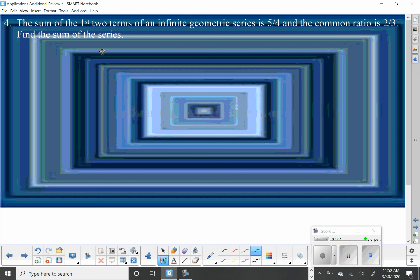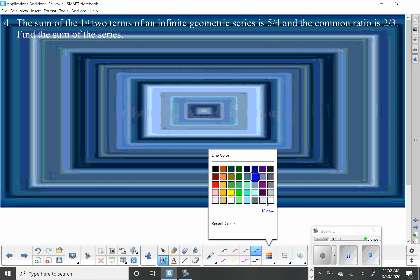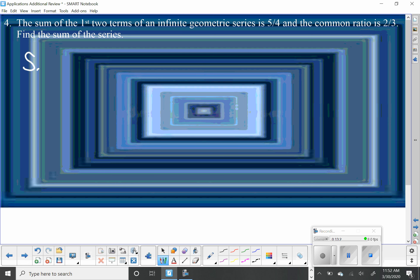Moving on to the next problem. The sum of the first two terms of an infinite geometric series is 5 fourths, and the common ratio is 2 thirds. Find the sum of the series. So S sub 2 equals 5 fourths. I know my ratio equals 2 thirds. This tells me that this will converge. I also know that the infinite summation equals A sub 1 over 1 minus R. I know R, but I don't know A sub 1.